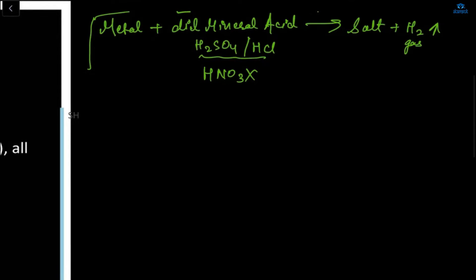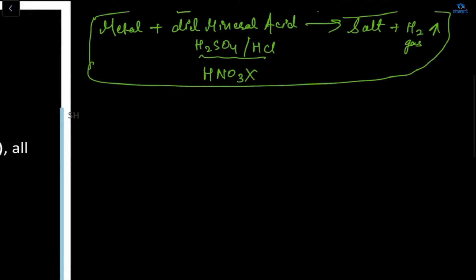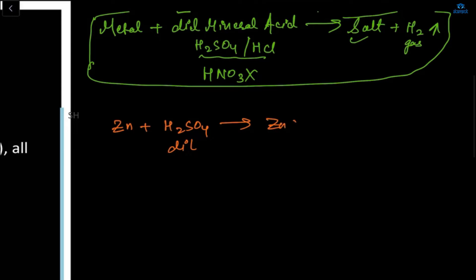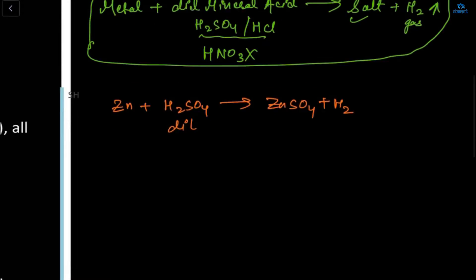So the reaction of metal with acid: we take metals and dilute mineral acid — H₂SO₄ or HCl — and it will prepare your salt and your hydrogen gas. Let's take zinc and put it in dilute H₂SO₄. It will form ZnSO₄, which is your salt, and hydrogen gas will evolve.